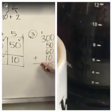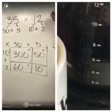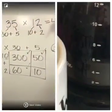3 plus 1 is 4. And that is your answer. 35 times 12 equals 420.